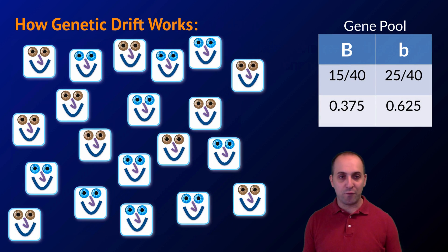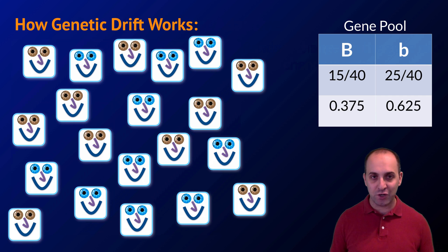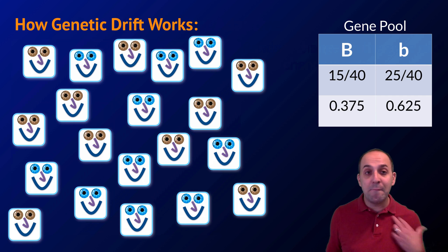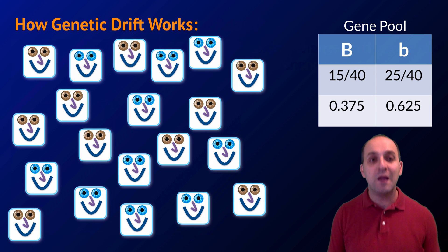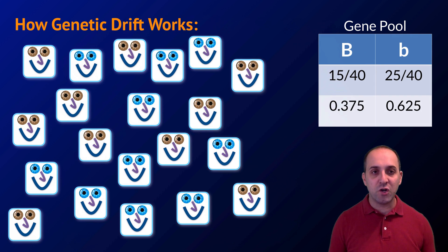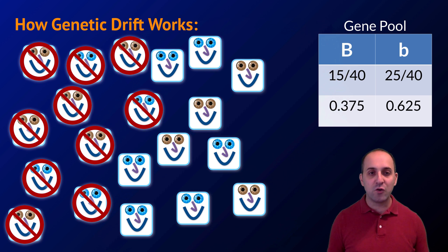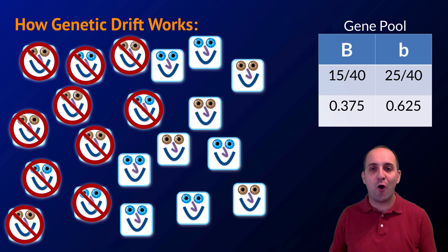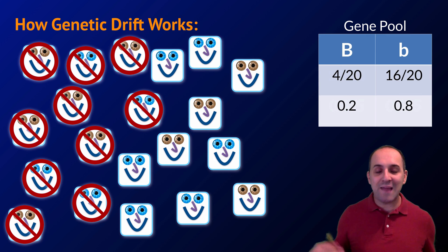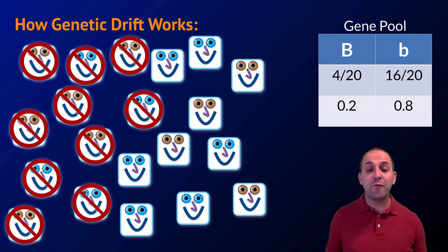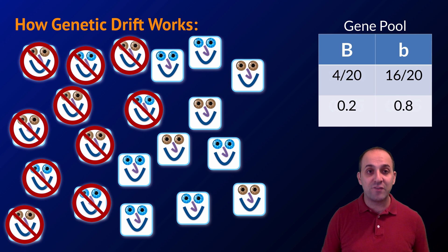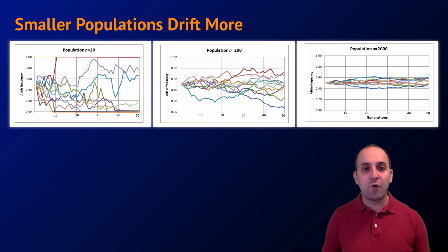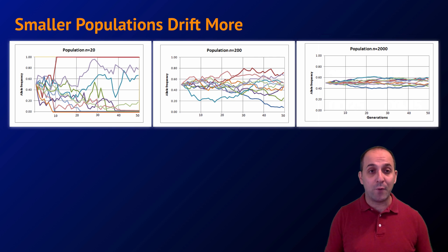Let's look at how genetic drift works using our hypothetical smiley population with their eye color trait. The big B allele codes for brown eyes and the little b allele codes for blue eyes. We're going to subject our population to genetic drift — a random number of individuals are removed, say by a freakish golf ball-sized hailstorm that killed off 10 of them. As a result, the gene pool has changed and allele frequencies have shifted. Smaller populations tend to experience stronger genetic drift than larger populations because each individual contributes more to the overall percentages of alleles in the gene pool.